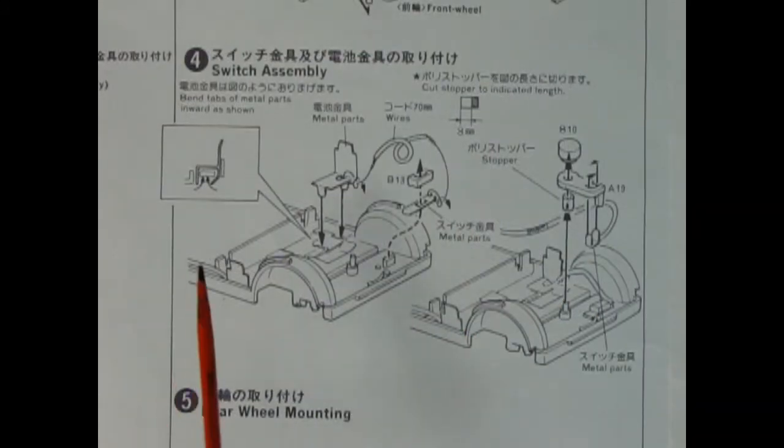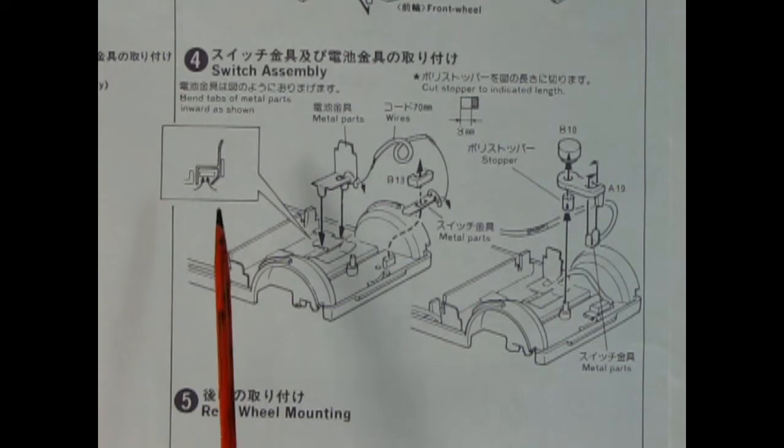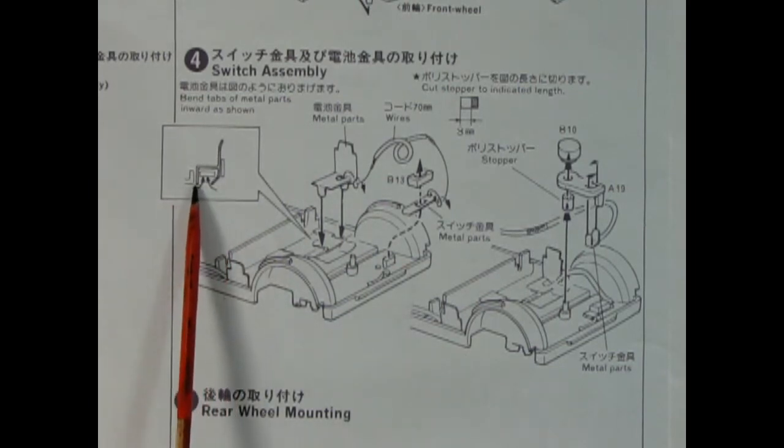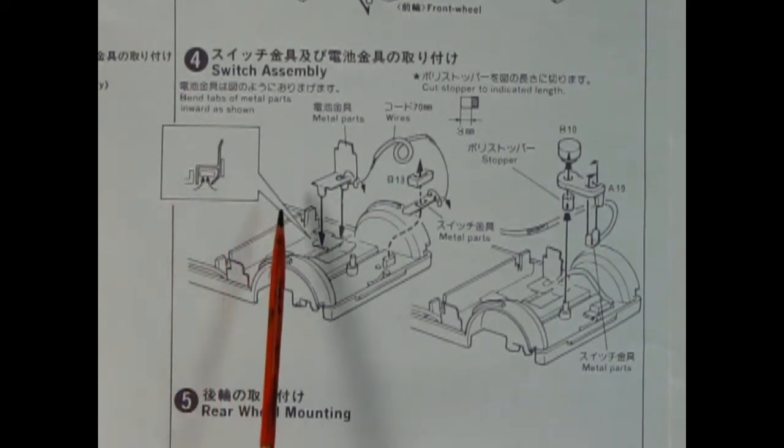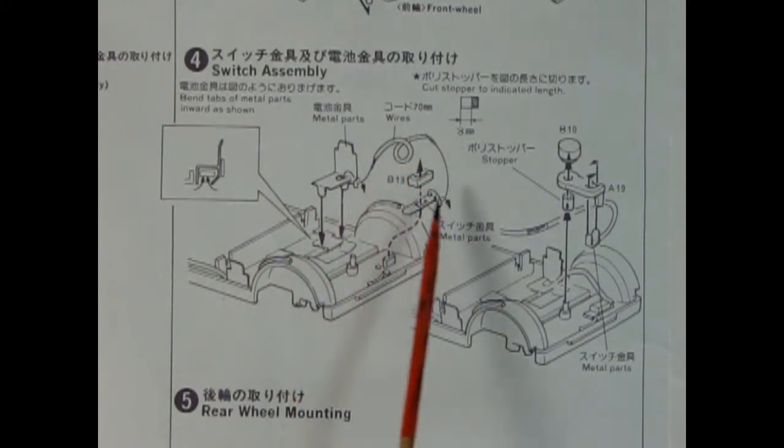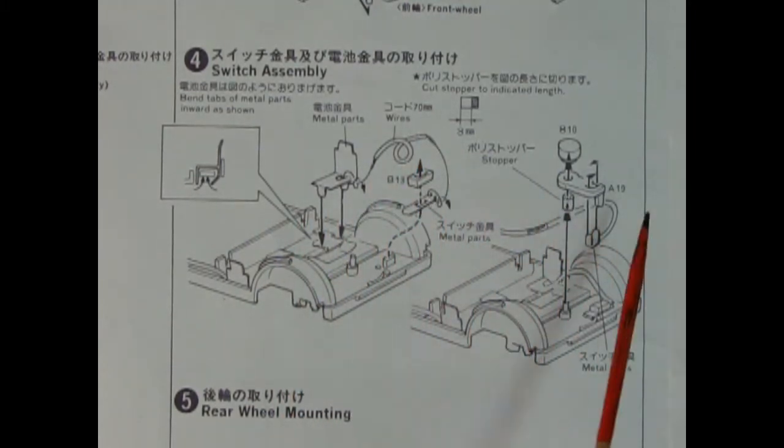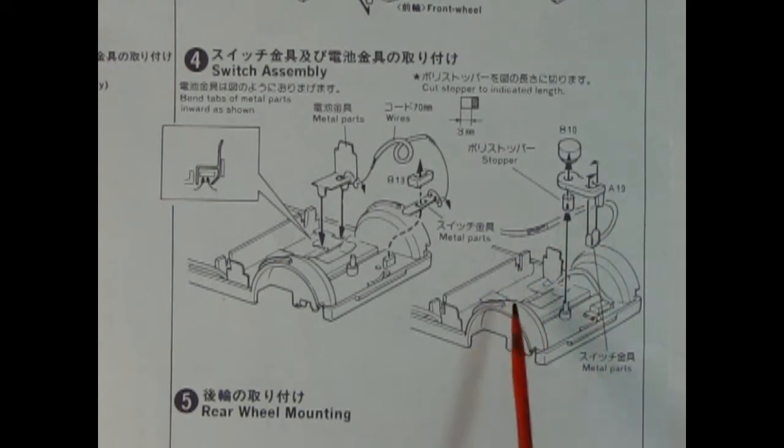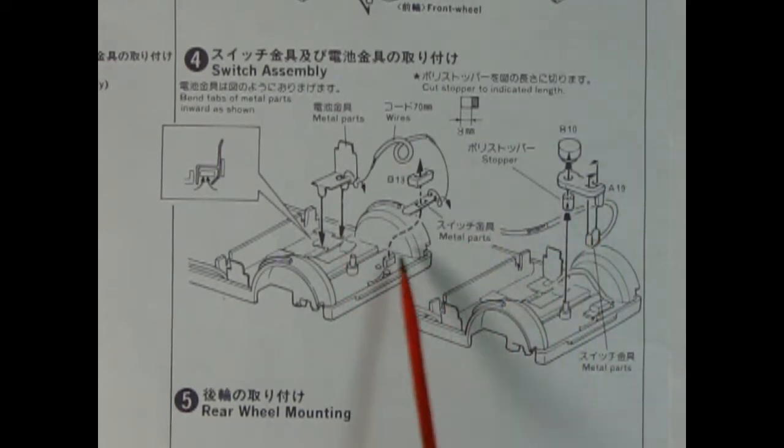Step four shows our switch assembly for the motorized model. Here we have our metal contact points being bent into the plastic, the wires we need, the little switch pedal and even in here there's a stopper and some other components. Once this is all together the switch will be able to move back and forth thus turning on and off your car.